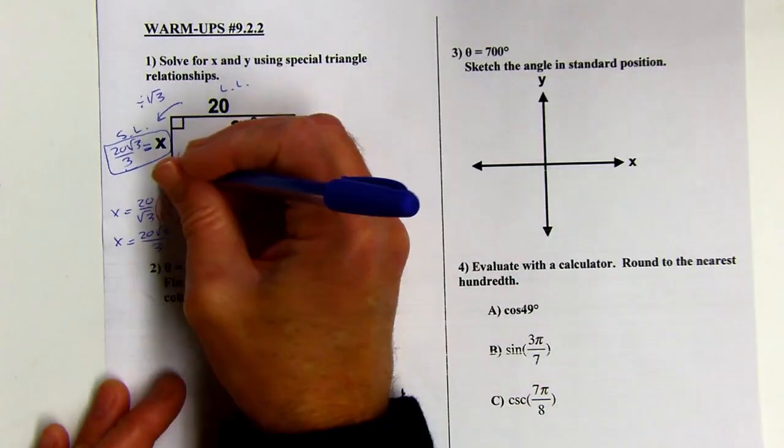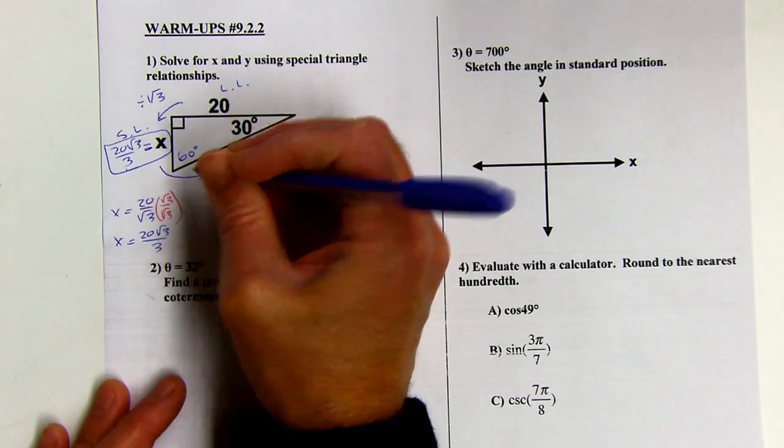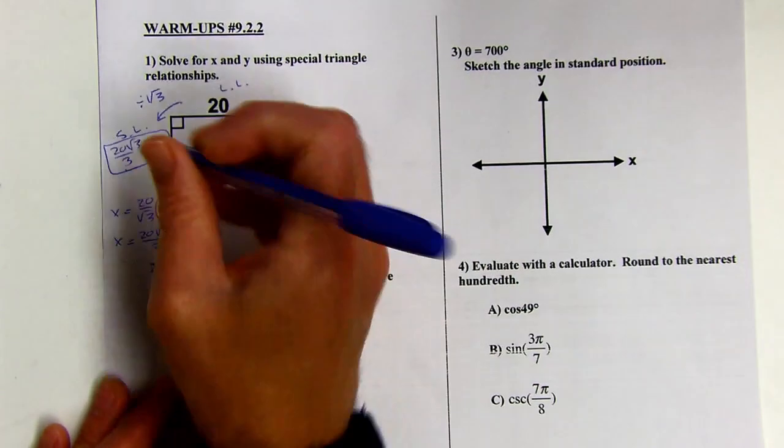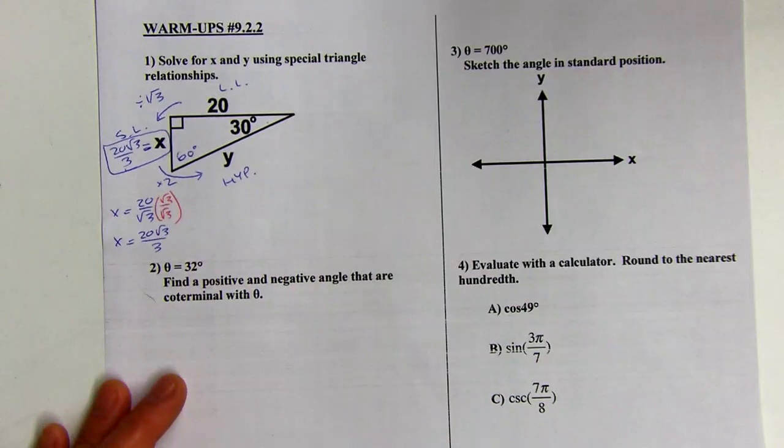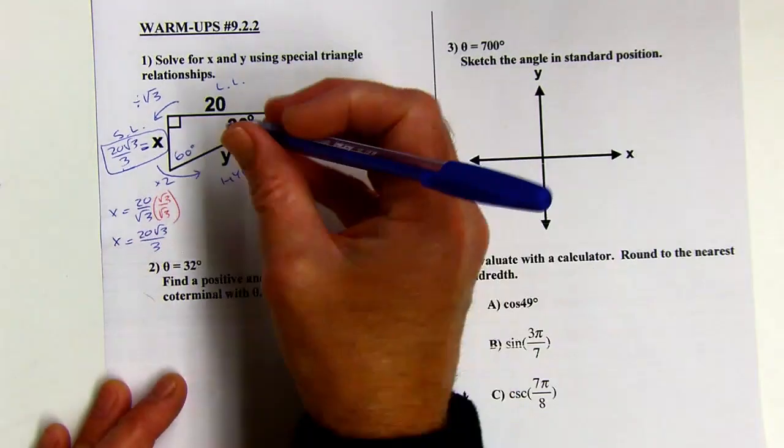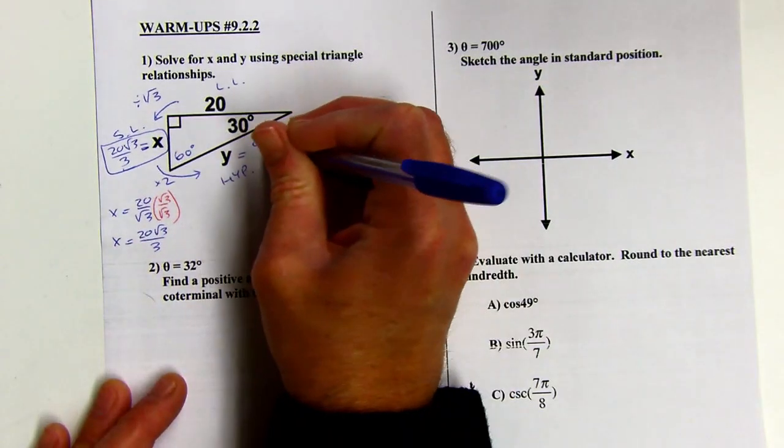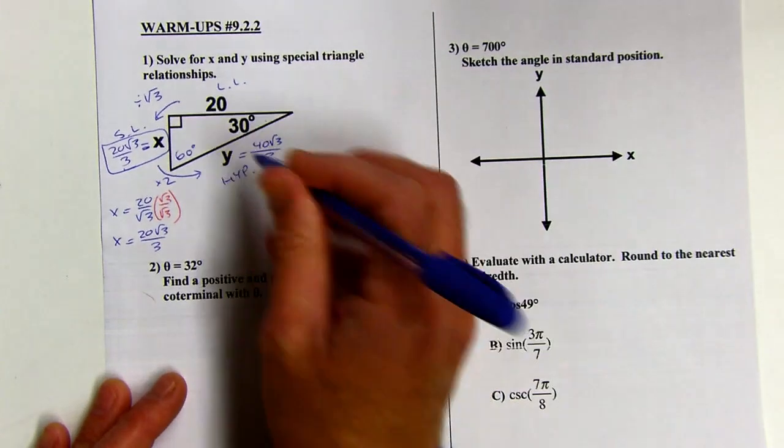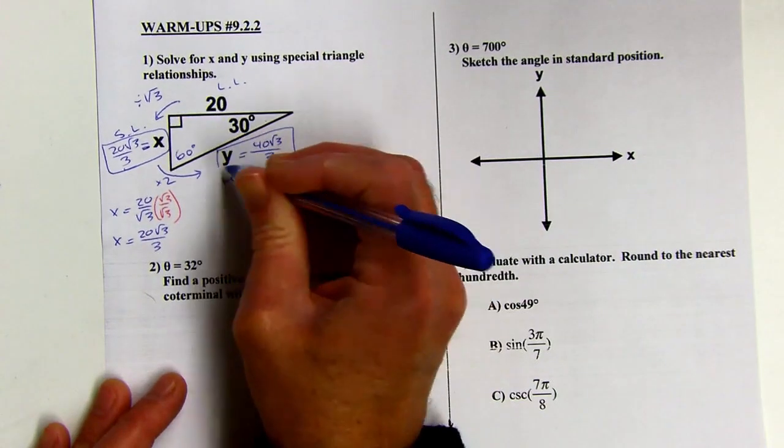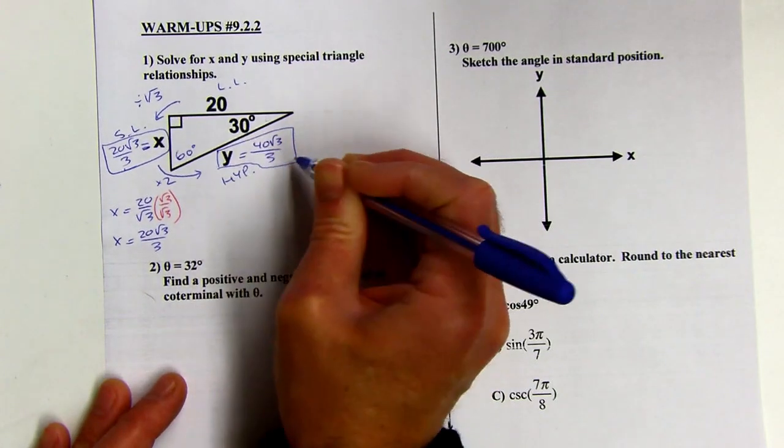All right, once you have the short leg, we can get the hypotenuse. It's going to be getting bigger. The hypotenuse is the biggest piece and we're just doubling the short leg to get the hypotenuse. So 20 root 3 over 3 doubled would be 40 root 3 over 3. Not 40 root 3 over 6. Don't double the denominator, just double the numerator because we're multiplying by 2 over 1 really when we're doubling it.